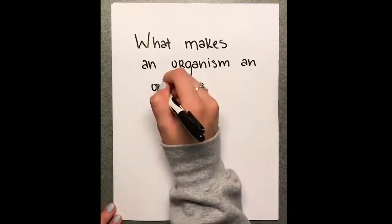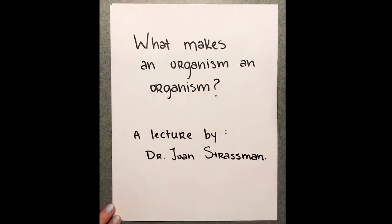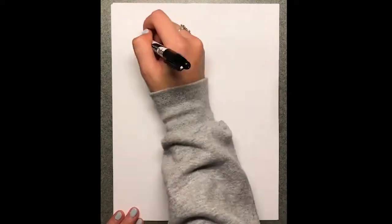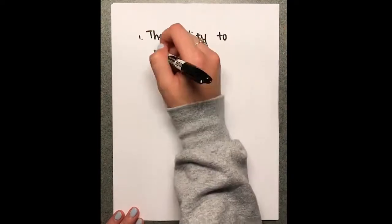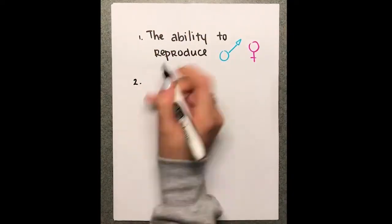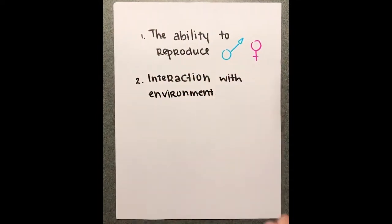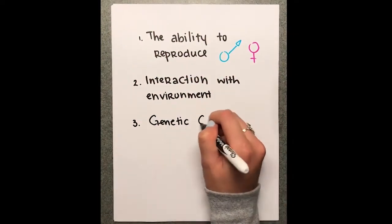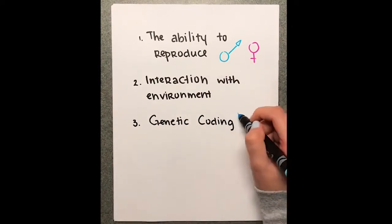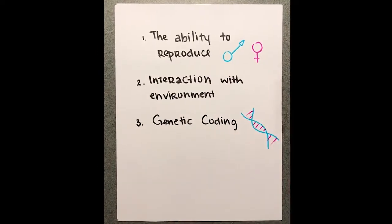What are the essential characteristics? What does it take to be an organism? The ability to reproduce. It must interact with its environment and the factors in it. It must have some sort of genetic coding to define itself.